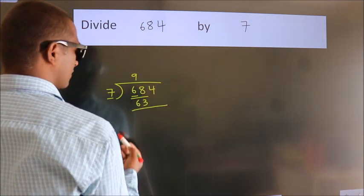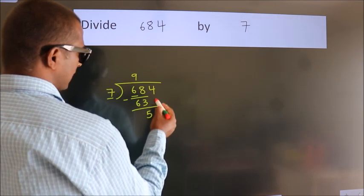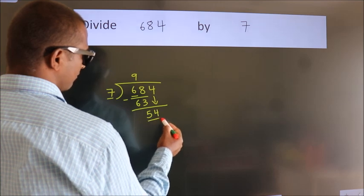Now we subtract and get 5. After this, bring down the beside number, 4. So, 54.